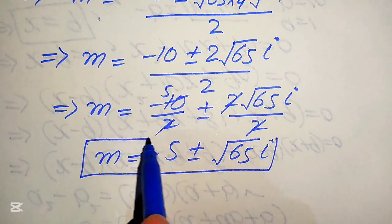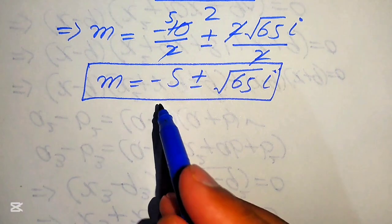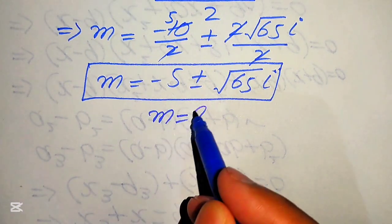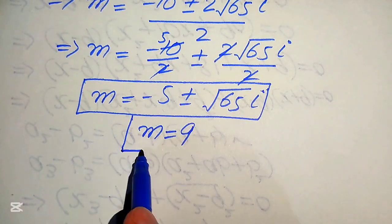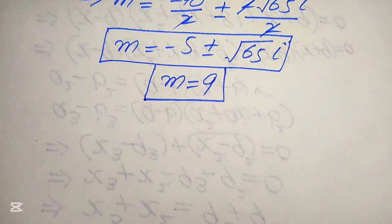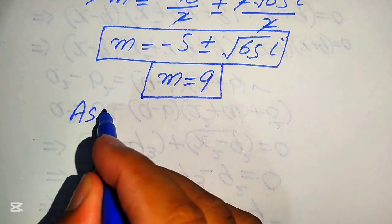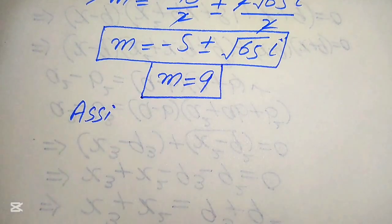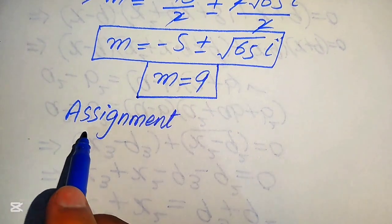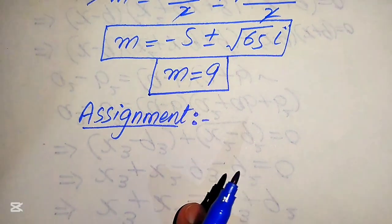These are the other two complex roots of the given equation. The final three roots are the two complex roots m equals negative 5 plus or minus square root of 65 times i, and the one real root m equals 9. This is the final answer to this problem. I hope you understand the above method and solution.